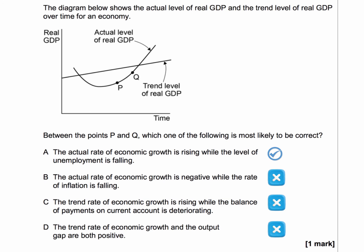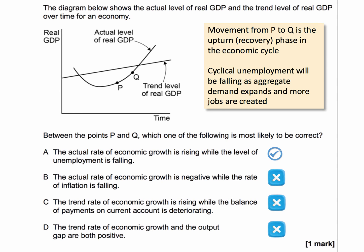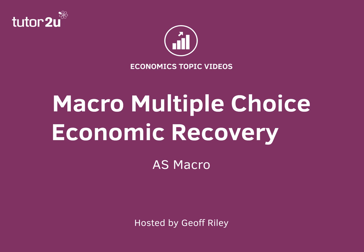So it's worth revising the economic cycle because these questions are coming up in multiple choice questions. The movement from P to Q is the upturn recovery phase in the cycle. Even though the output gap is negative, cyclical unemployment will be falling as aggregate demand increases and more jobs, hopefully, are created. That's how to answer this question.